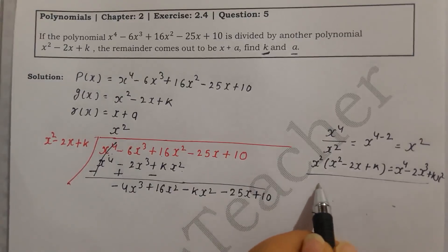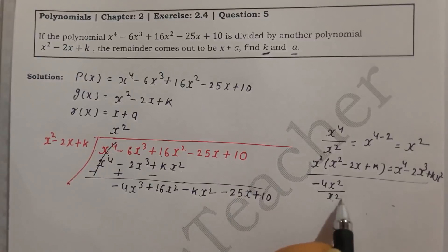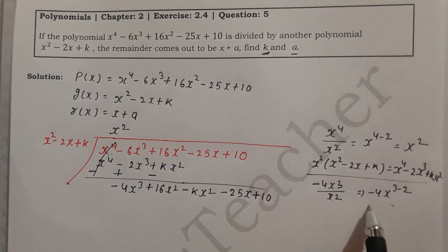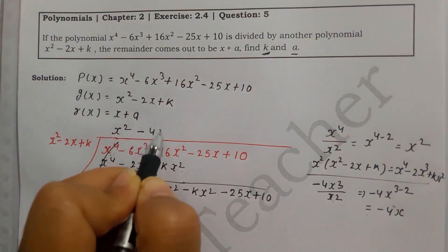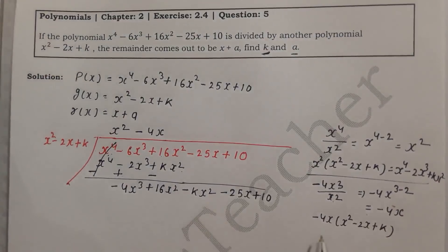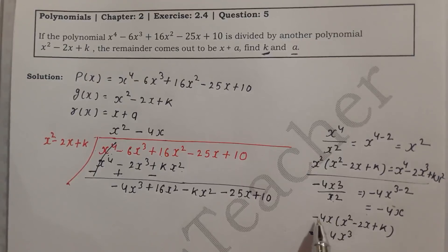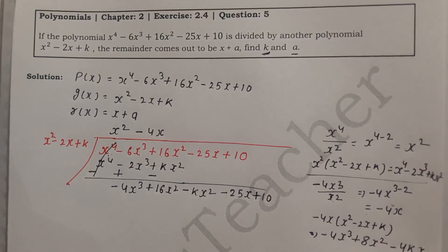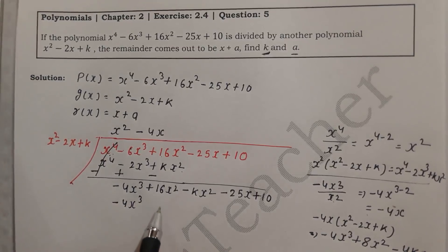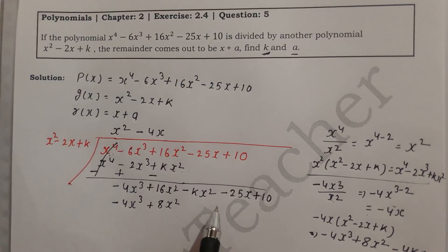Now for the next division step, we divide minus 4x³ by x², giving the next quotient term minus 4x. The power is 3 minus 2. So the quotient is minus 4x. We multiply minus 4x by the divisor x² minus 2x plus k, giving minus 4x³ plus 8x² minus 4kx.